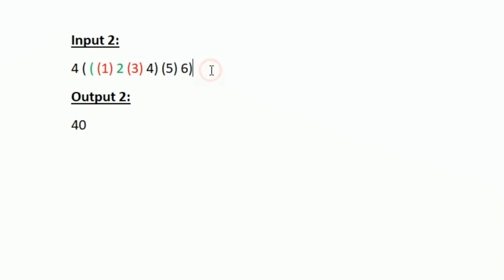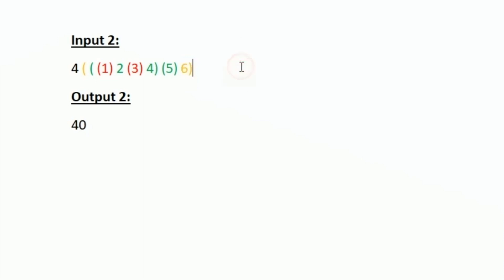After integer 2 there is another opening parenthesis, so the level increases. Integer 3 is in level 3 (red color). Then that parenthesis closes, so integer 4 is back at level 2. After 4, a closing parenthesis moves us to level 1. Then an opening parenthesis brings us back to level 2, so integer 5 is at level 2 (green). After closing, integer 6 has no special opening bracket so it is at level 1.